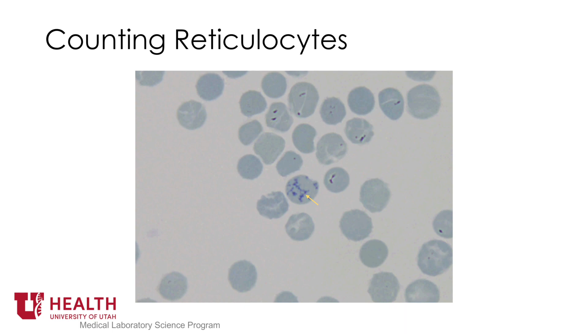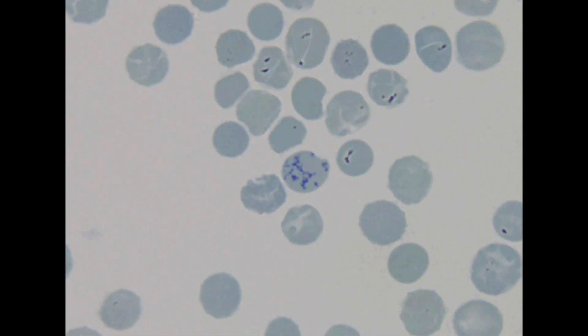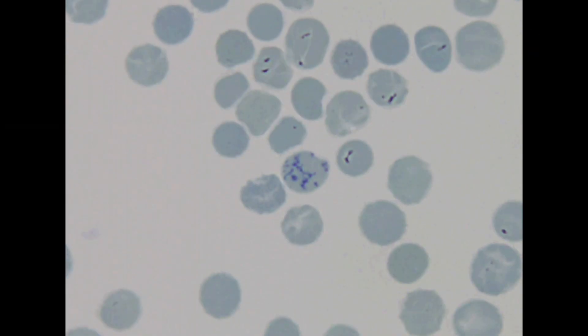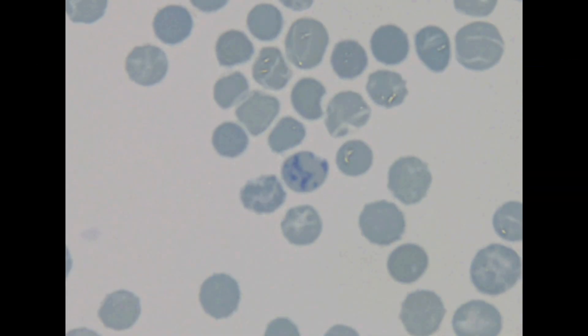If you are unsure if the cells are reticulated, focus the objective up and down. Artifacts will become refractive, but the reticulated inclusions will go in and out of focus.